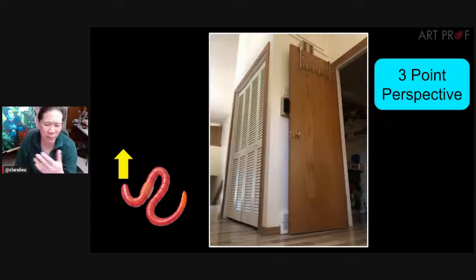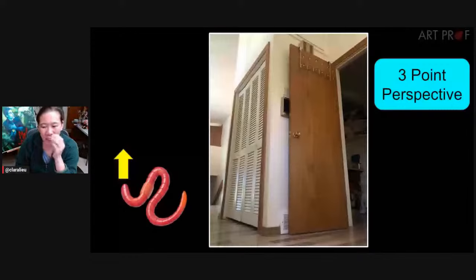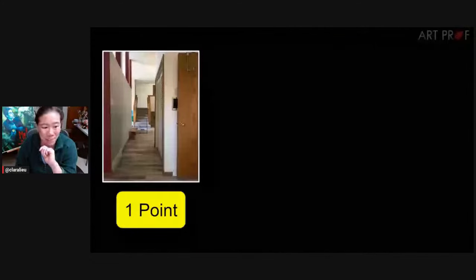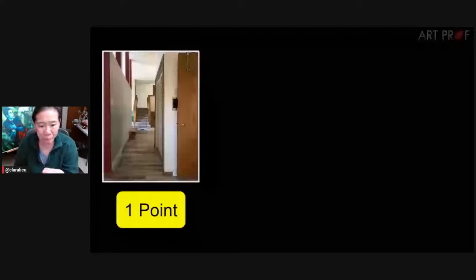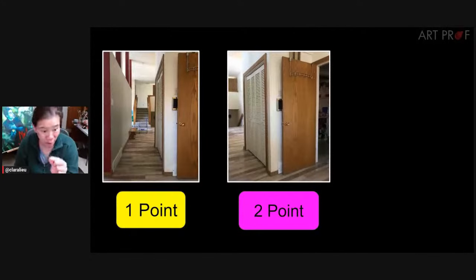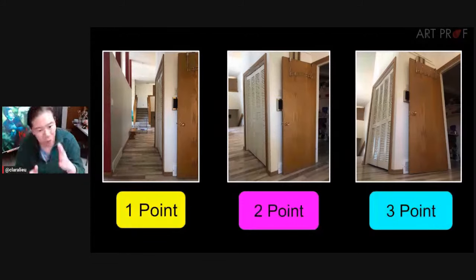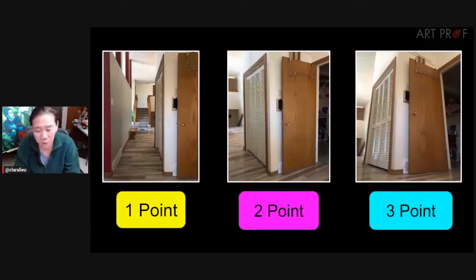Look at the comparison — this is the thing I don't think a lot of people teach, and it's a problem because this really solidifies the differences. One-point: looking straight. Two-point: I'm looking at the corner. Three-point: I'm still at the corner, but I'm looking up. Seeing it within the same scene but shifting my point of view based on the perspective — that is the way to understand the difference.